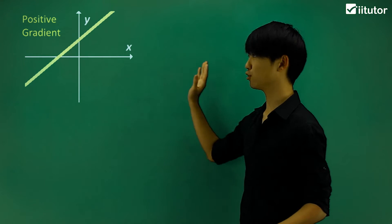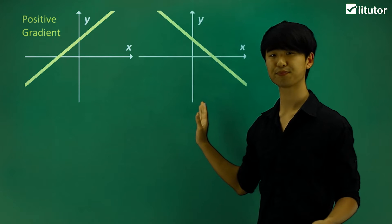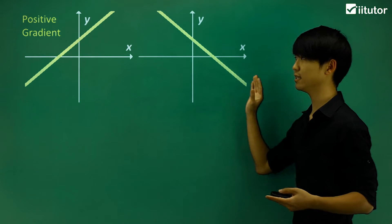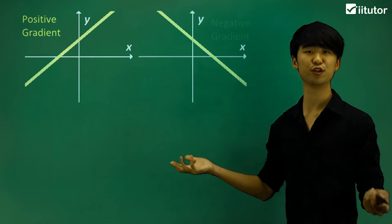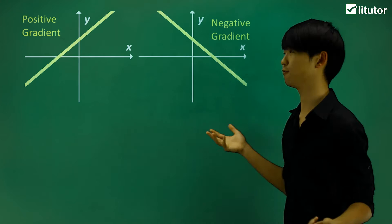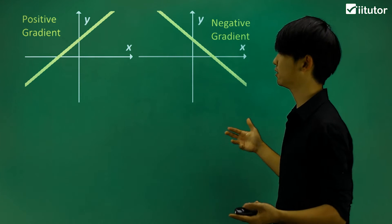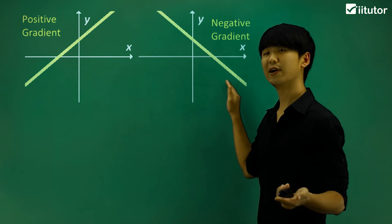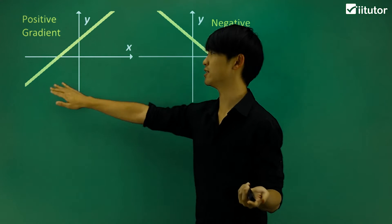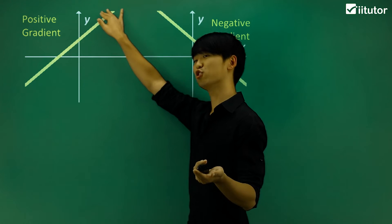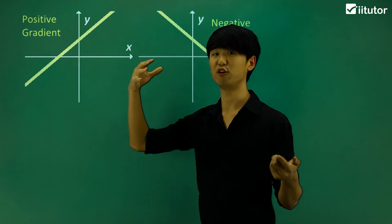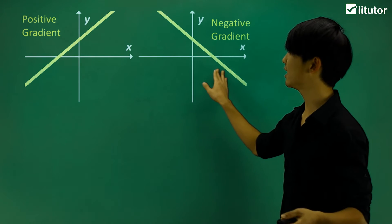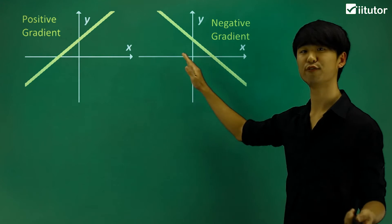Now if we take a look at a different one — very similar, but it goes from top down — intuitively, it will be a negative gradient, meaning it will have some sort of value. So for example, I could say this line has a gradient of positive 1, while this one has a gradient of negative 1.